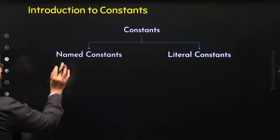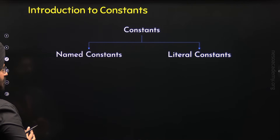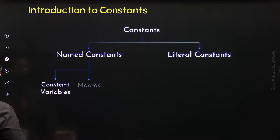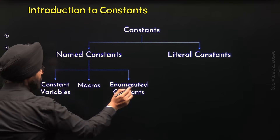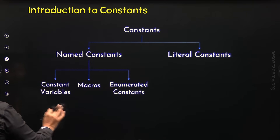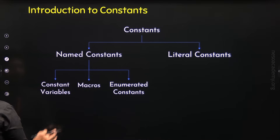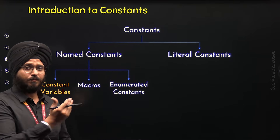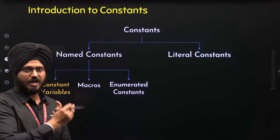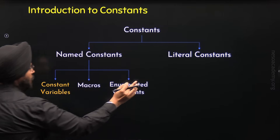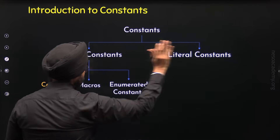We have three different types of named constants. The first one is constant variables. Then we have macros. And then we have enumerated constants. Our focus in this lecture will be on constant variables. We will understand what a constant variable is and concepts based on this type of named constant. Later we will understand macros, enumerated constants, and literal constants.